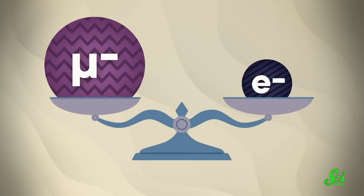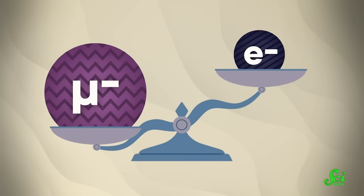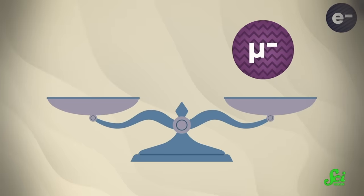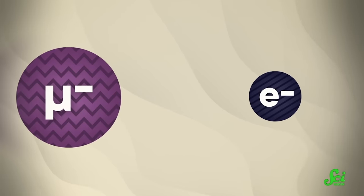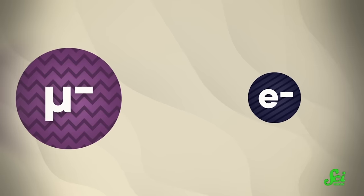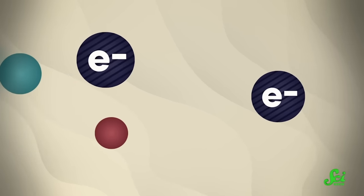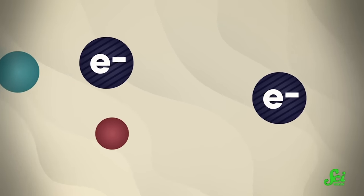But there are two key differences between them. First, a muon is about 200 times more massive than an electron, though that still makes it about 9 times lighter than a proton. And second, it is unstable. After about two millionths of a second, it will spontaneously decay, leaving behind an electron and other weird subatomic particles.